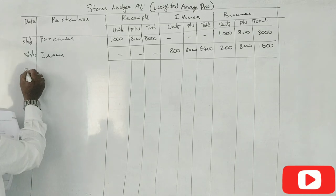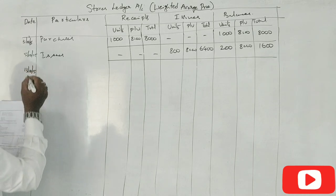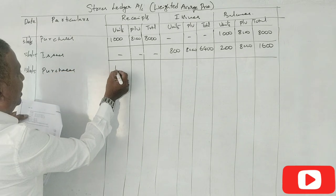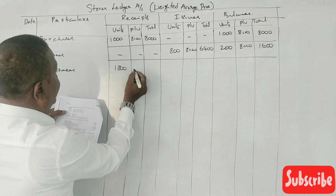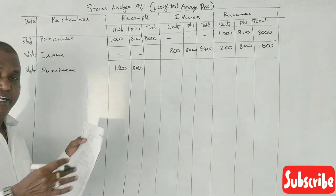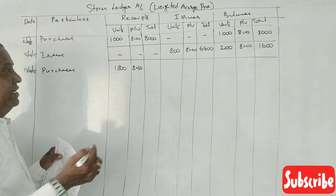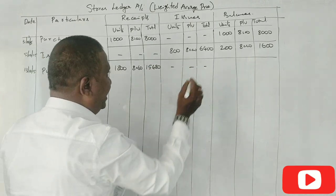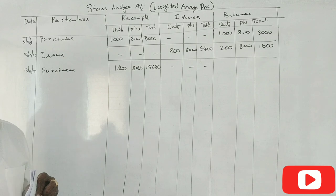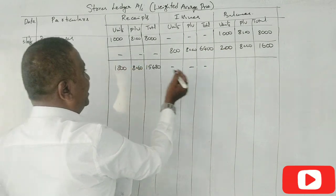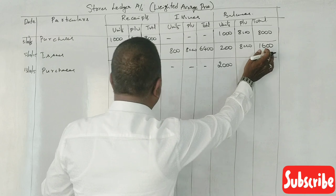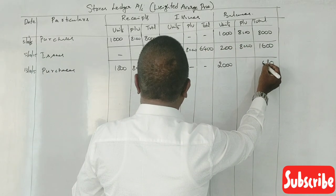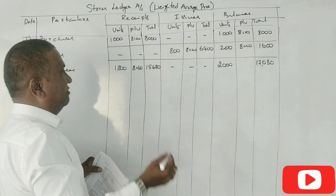13th of October: 1,800 units purchased at ₹8.60 paise — ₹15,480. So 200 units plus 1,800 units equals 2,000 units. ₹1,600 plus ₹15,480 equals ₹17,080.